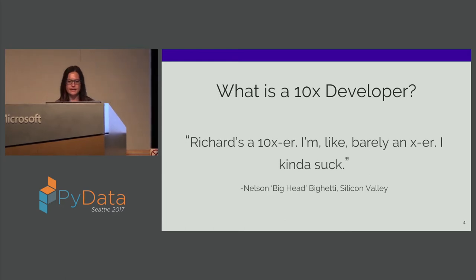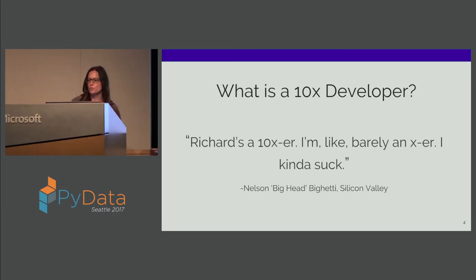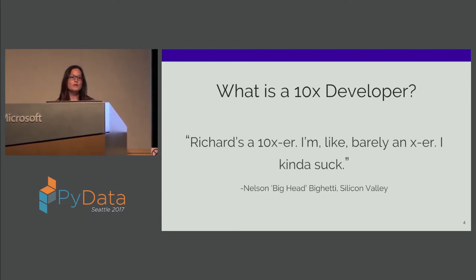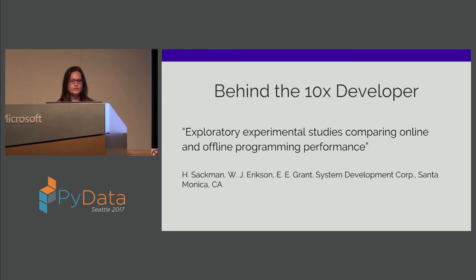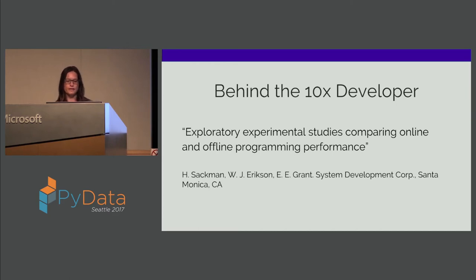So what is a 10x developer? It's someone who is literally ten times more productive than the average developer — not only can they produce more code per hour, but they produce fewer bugs. They also mentor, write documentation, and have broad skills that go beyond just knowing how to code. In 1968, Sackman, Erickson, and Grant created a study. They looked at programmers with an average of seven years of experience and discovered a broad range of time it took each of them to complete a coding assignment.